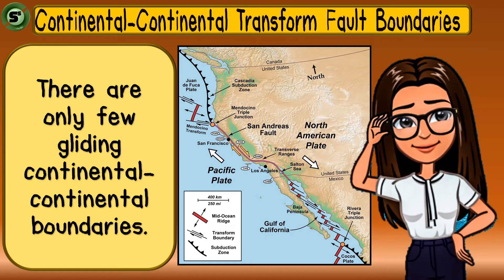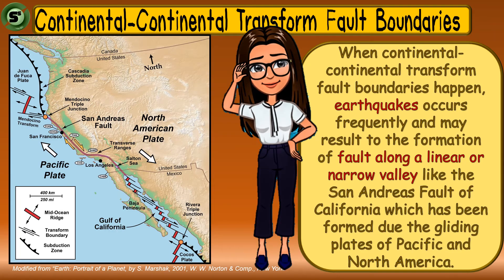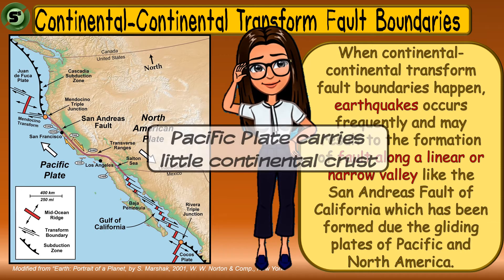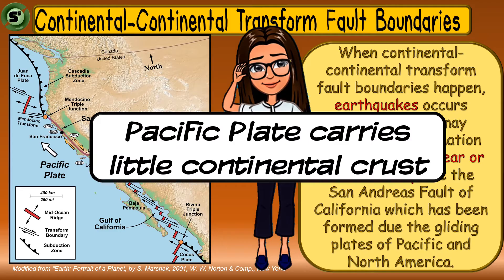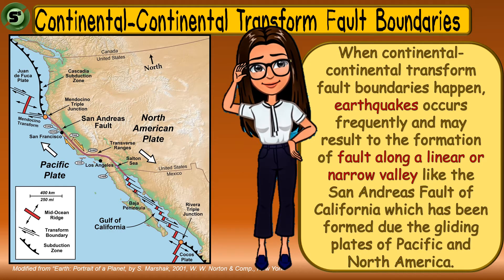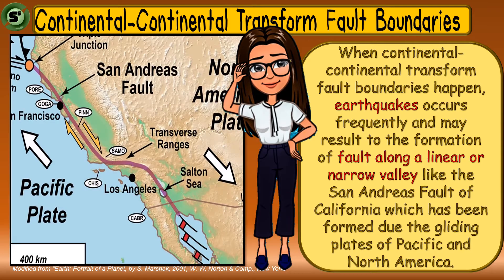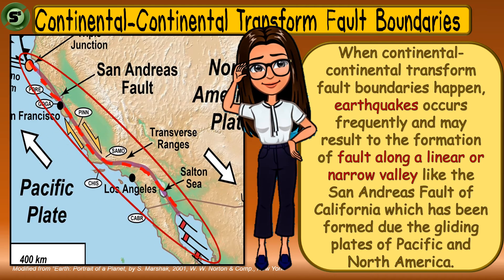The other type of transform fault boundaries happens when a continental plate slides or glides against another continental plate. There are only a few continental-continental transform fault boundaries. Do you know that the Pacific plate carries a little continental crust? At the edge of the Pacific plate, it has that continental crust. Thus, the motion between the North American plate and Pacific plate at this point is continental-continental transform fault boundaries.